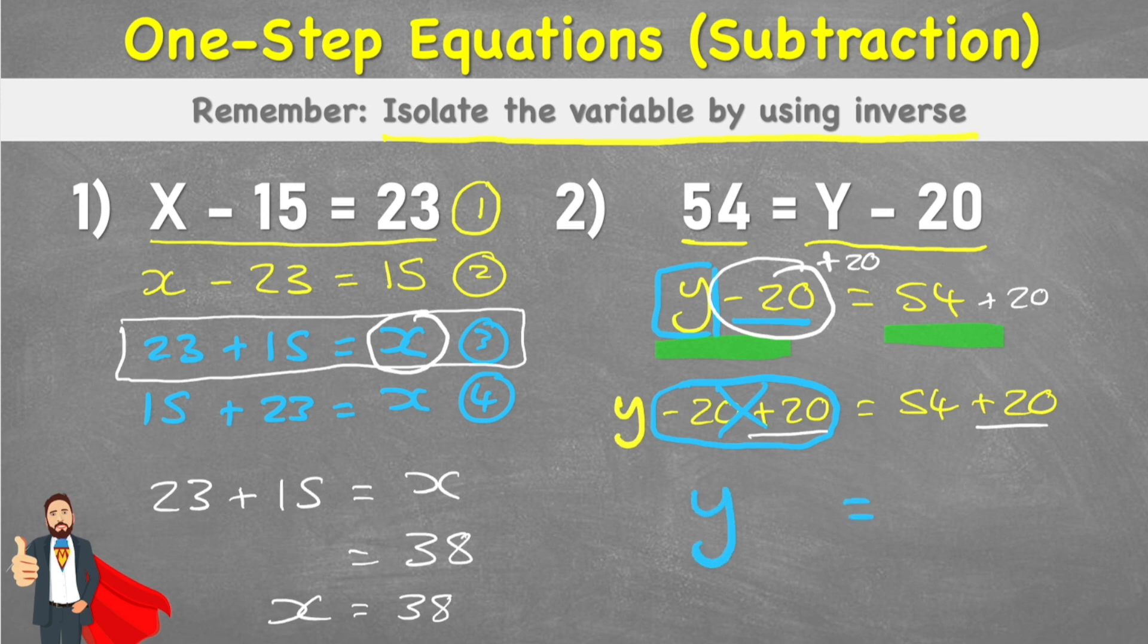y equals 54 plus 20. And 54 plus 20 is 74. So y equals 74. So two different methods of solving it there. First, we have the number family method. And then we have the substitution method.